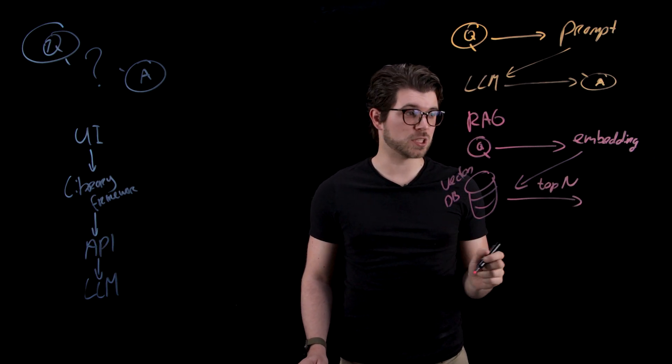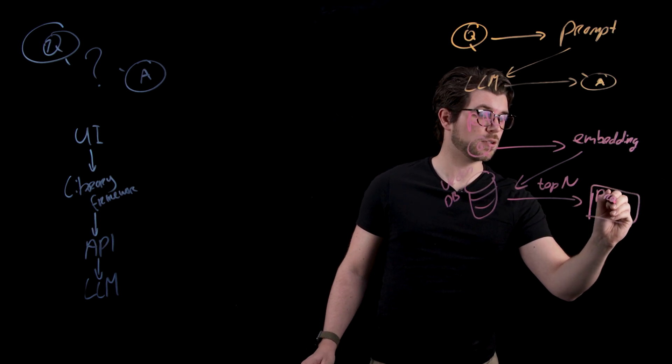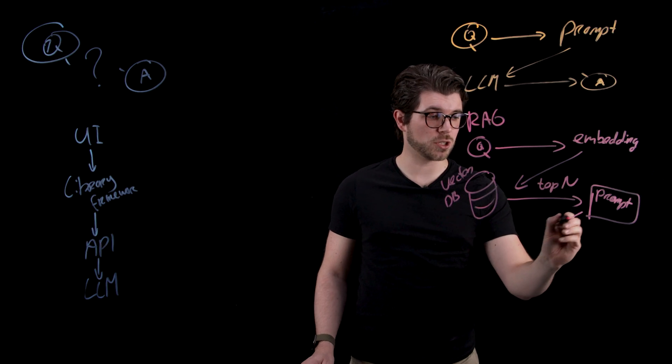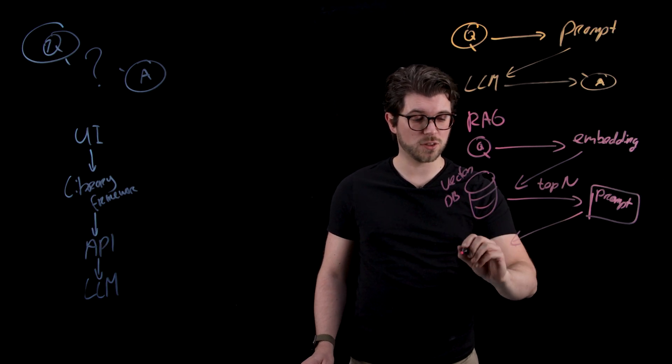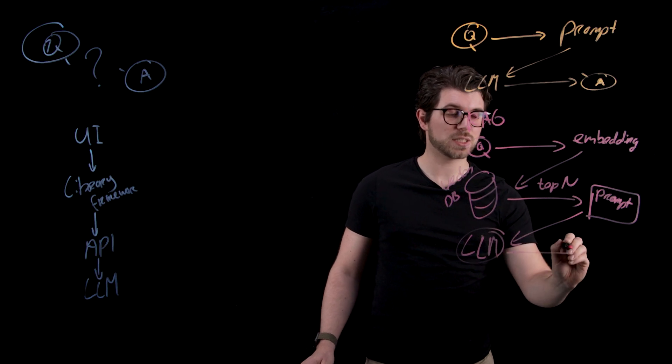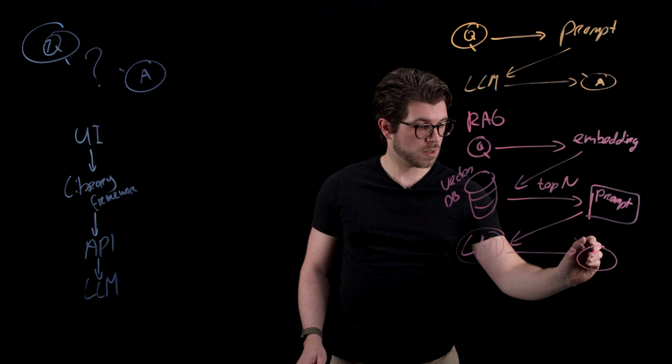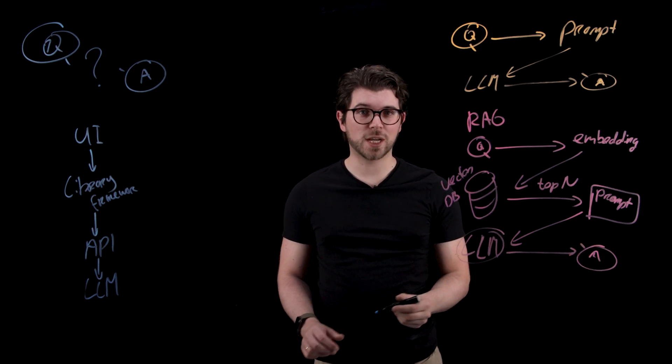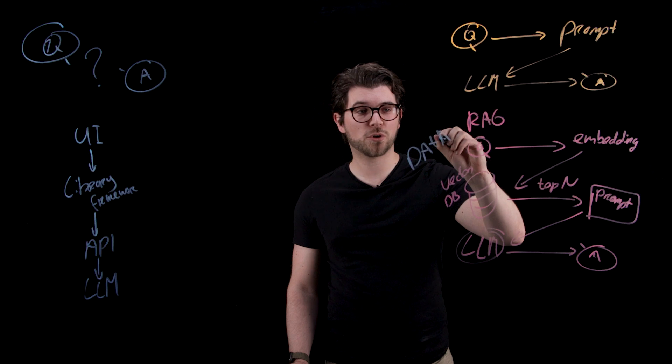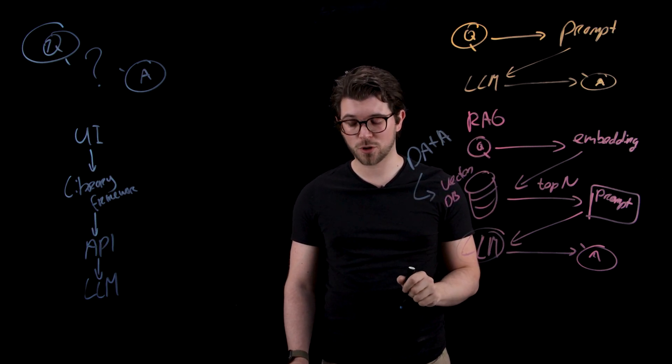These top-end matches will be put inside a prompt, and this prompt will of course also contain your question. What the LLM sees is your prompt which includes both the question and the top-end matches, and based on this it's going to return your final answer. With RAG there is also a stage where you upload your data into the vector database, and this is important because otherwise the vector database won't be able to retrieve any relevant context.